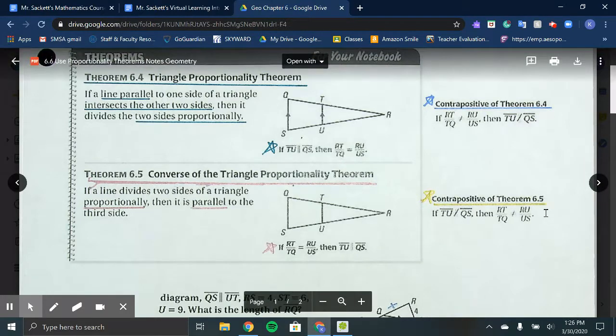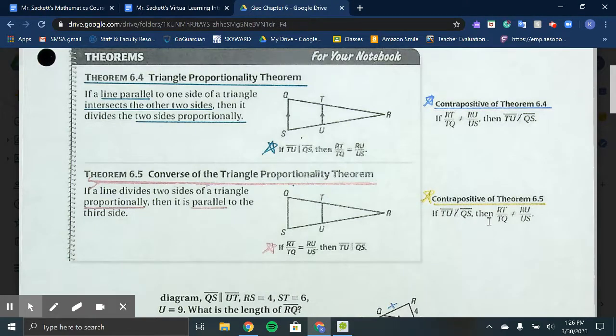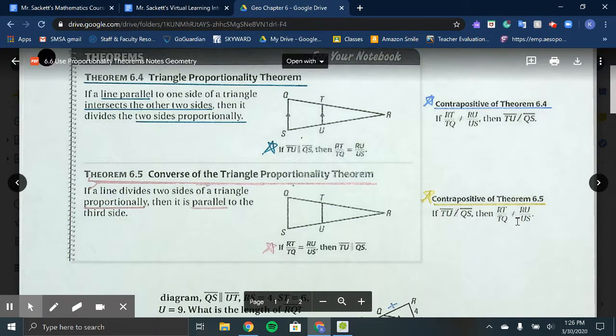And on the right, we have the contrapositive to Theorem 6.5. If TU is not parallel to QS, then those segments are not proportional.